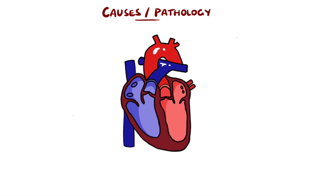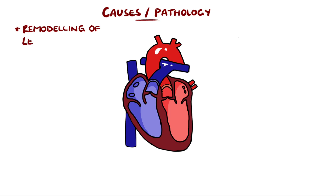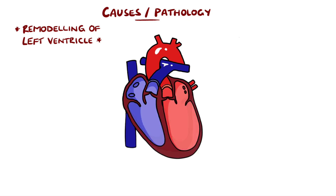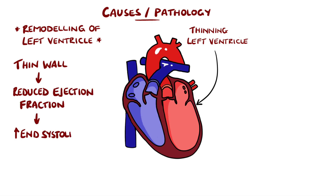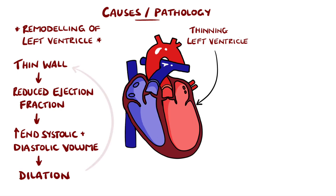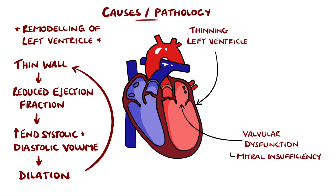The hallmark of pathology in dilated cardiomyopathy is remodelling of the left ventricle. This is seen as a thinning of the ventricular wall, giving a reduced ejection fraction and gradually increasing end-systolic and end-diastolic volumes. This dilation continues and can lead to valvular dysfunction, such as mitral and tricuspid insufficiency, which further worsens the ejection fraction.